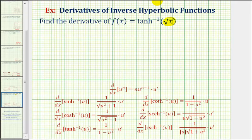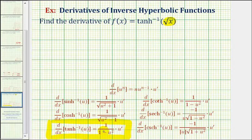If we take a look at our derivative formulas, we'll have to use this derivative formula that involves the inverse hyperbolic tangent function. Notice how the derivative formula already includes the chain rule, where u is equal to the inner function, and therefore the derivative with respect to x has two factors.